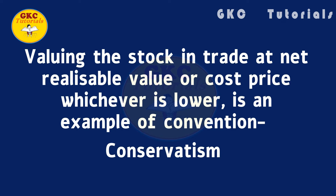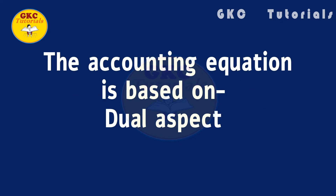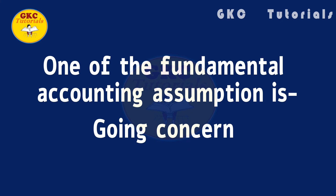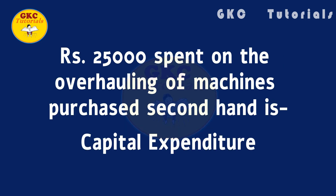Valuing the stock in trade at net realizable value or cost price whichever is lower is an example of the convention of conservatism. The accounting equation is based on dual aspect. One of the fundamental accounting assumptions is going concern. Rupees 25,000 spent on the overhauling of machines purchased second hand is capital expenditure.